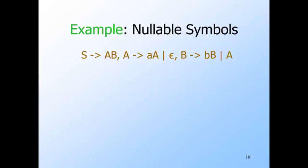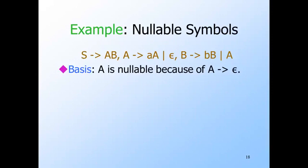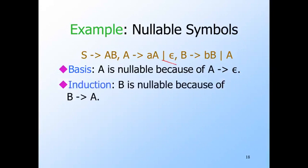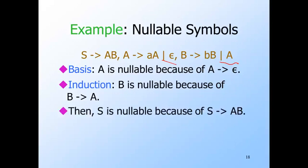Here's an example grammar for which we will discover the nullable symbols. For the basis, we know A is nullable because of the production with epsilon body. In the first round of induction, we find B is nullable because of the production B goes to A — all symbols in the body, namely A, are already known to be nullable. In the second round, we discover S is nullable because of its body AB, both symbols of which are already known to be nullable. This algorithm finds all and only the nullable symbols — we're not going to give the proof, which consists of two simple inductions.